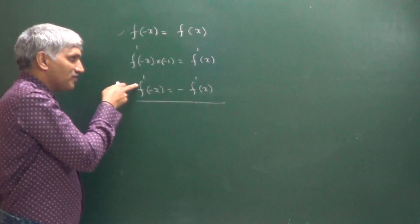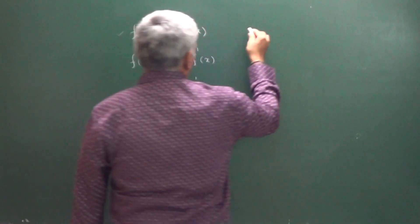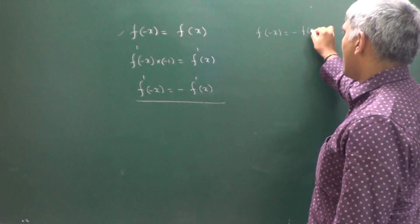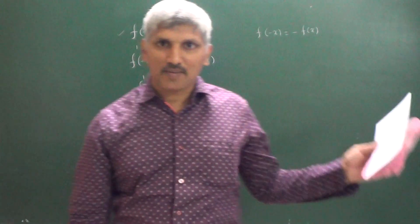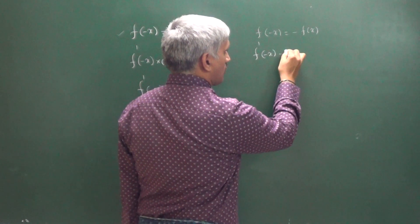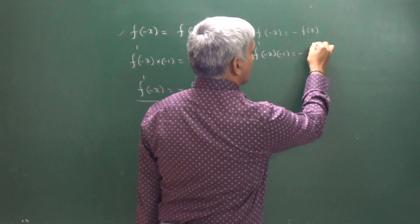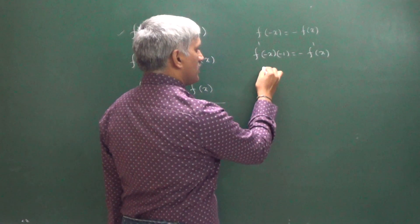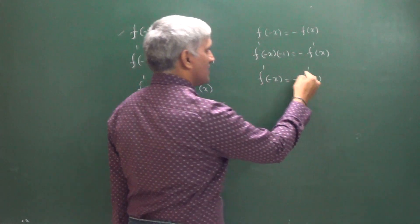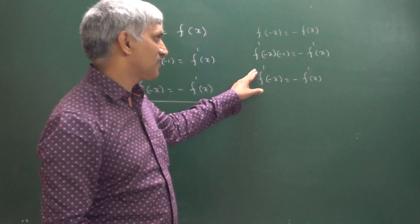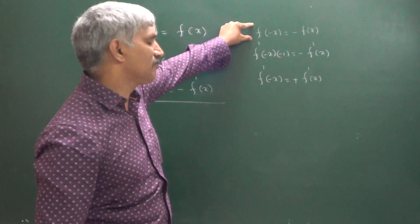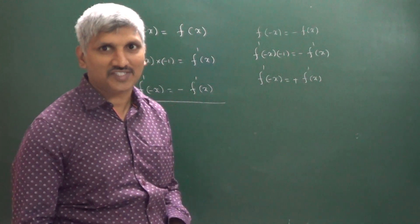Similarly, if f of minus x equals minus f of x — meaning f is an odd function — differentiate it. We get f dash of minus x times minus 1 equals minus f dash of x. Both sides minus cancel, giving f dash of minus x equals f dash of x. So if f is an odd function, its derivative is an even function.